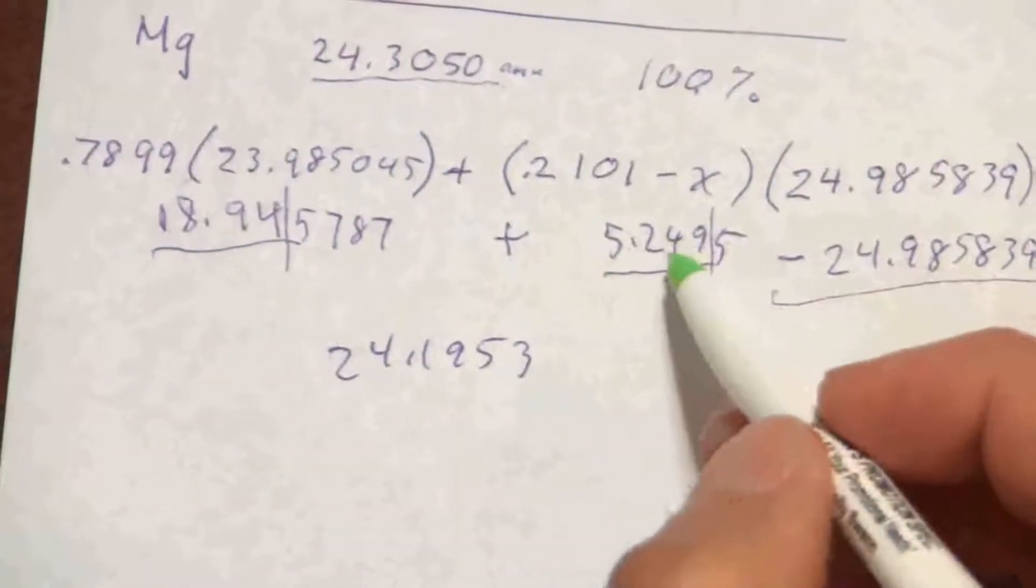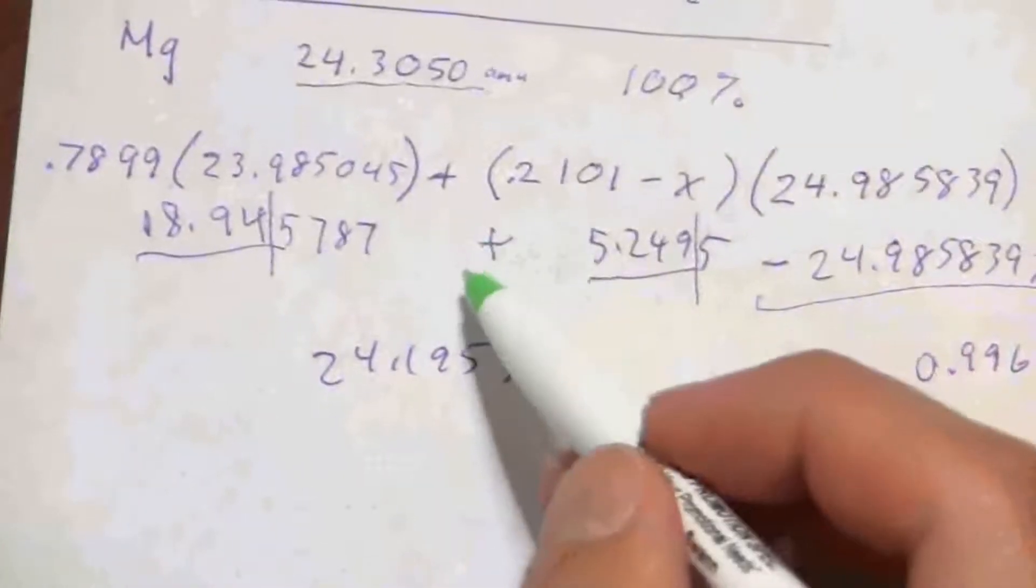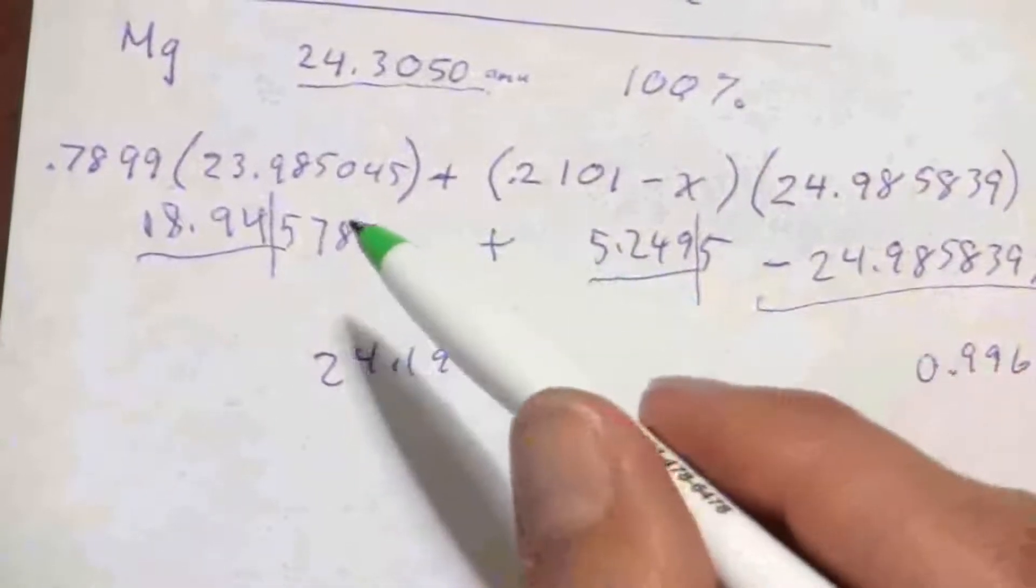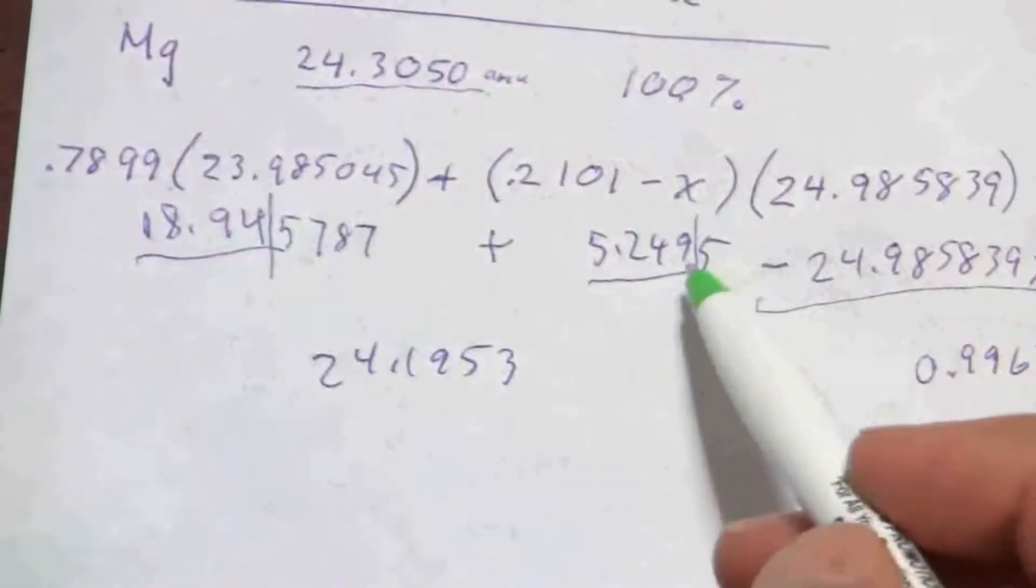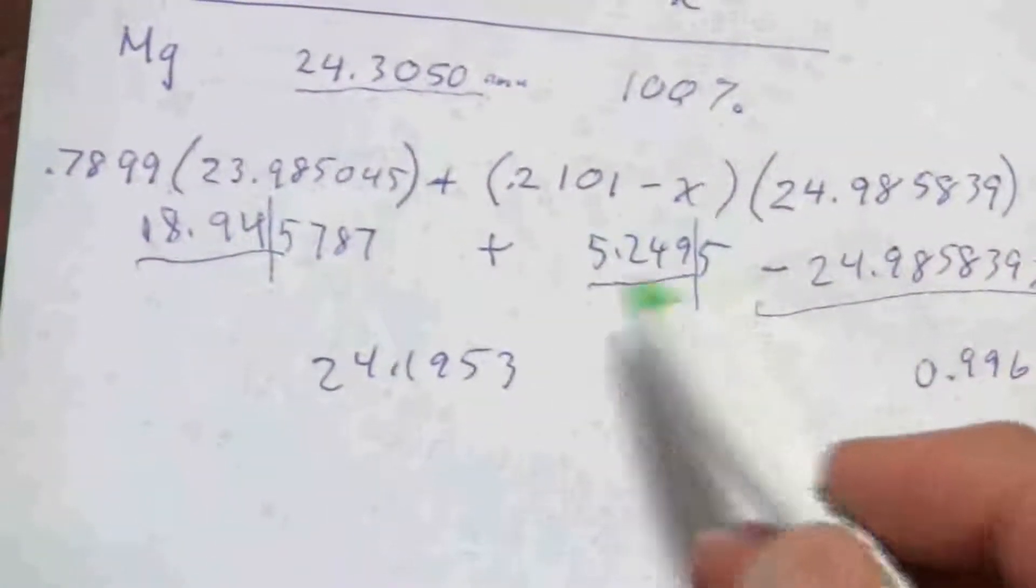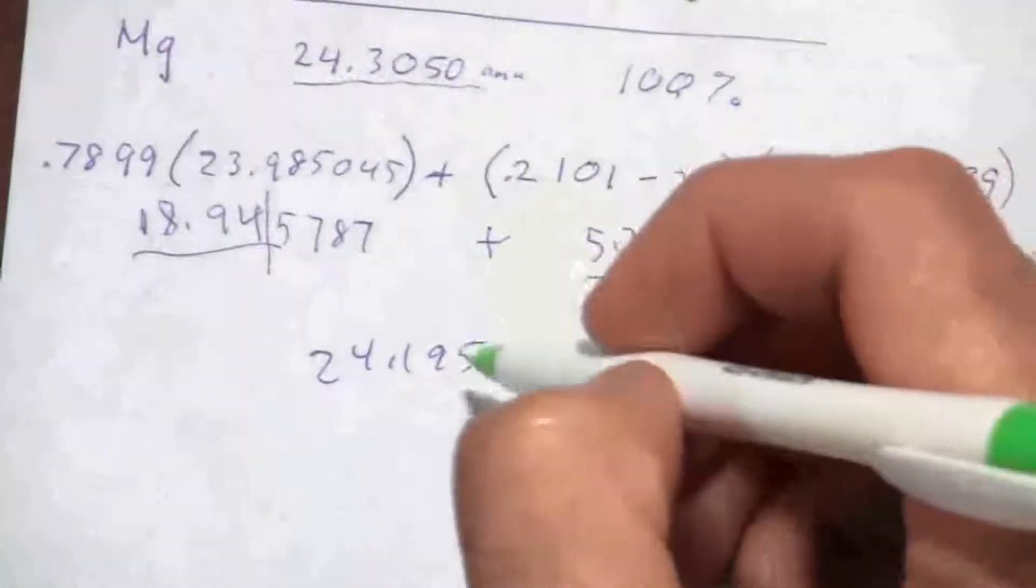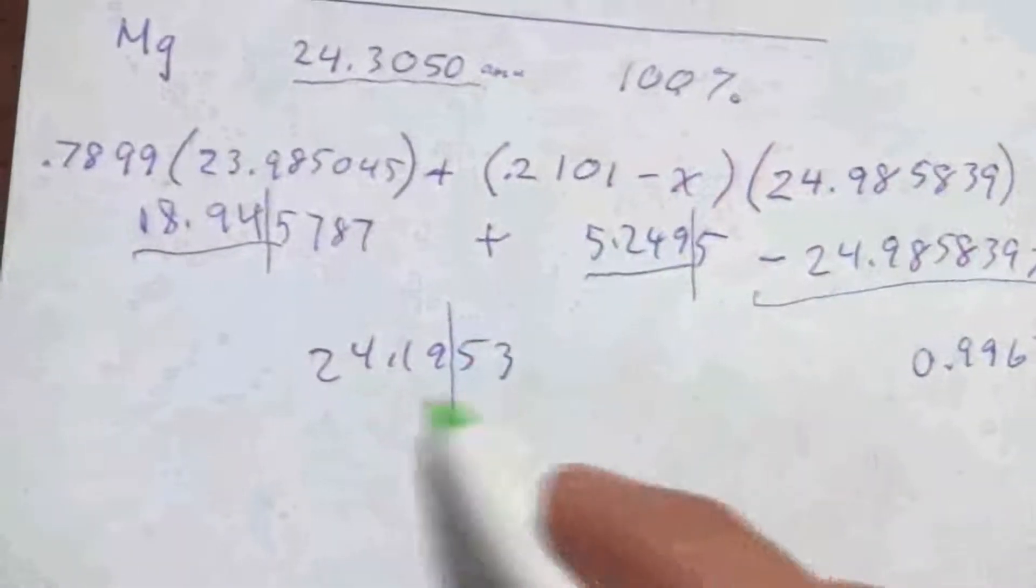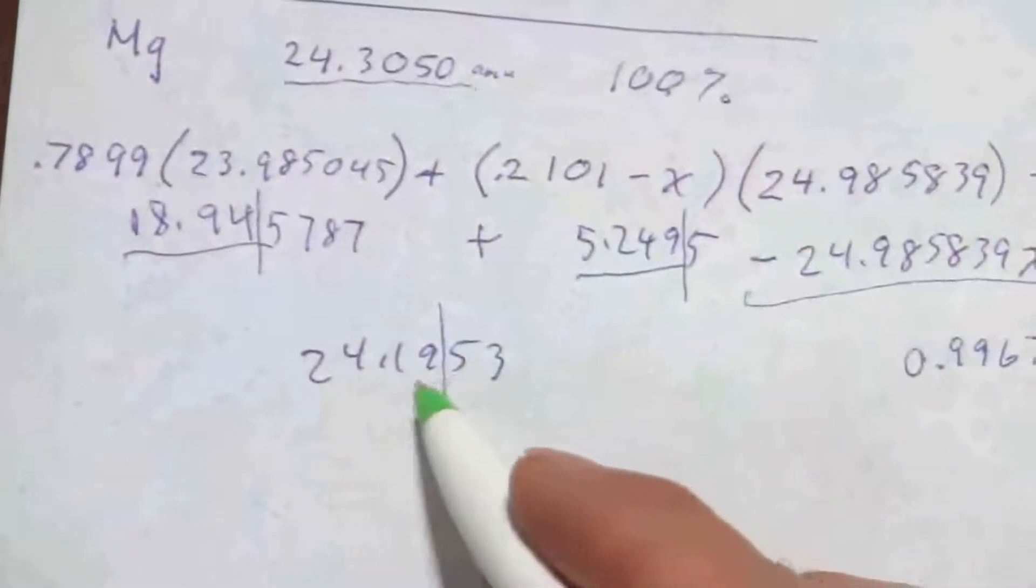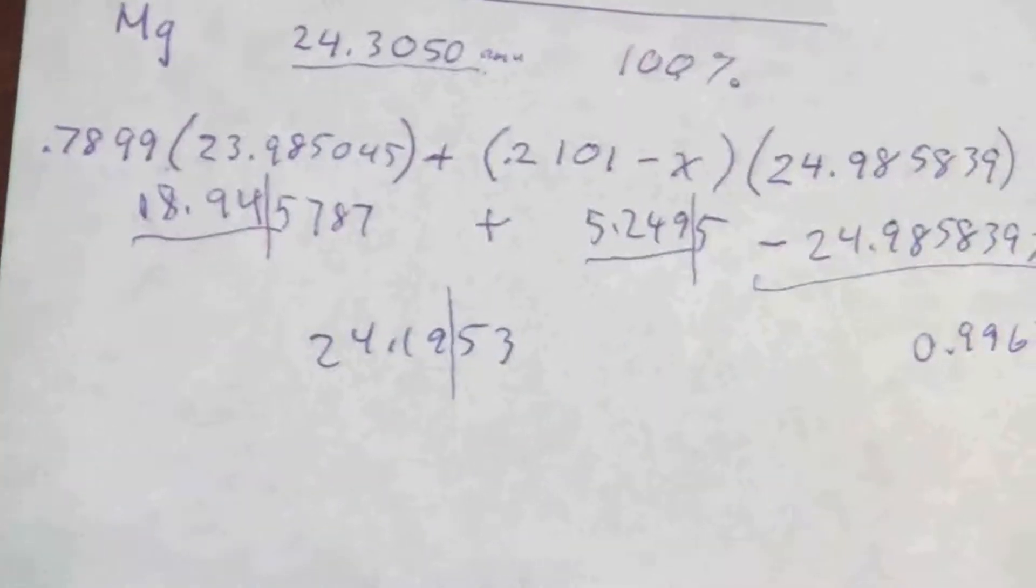And my significant figures for this number here—I'm adding, so I go with the fewest number not of significant figures but of decimal places. They're both four significant figures, but here I have three decimal places, there I have two. So in the end, I'm going to round this, or I'm going to remember that I only have two decimal places that are significant in that number.